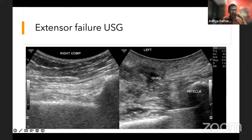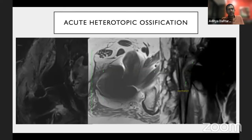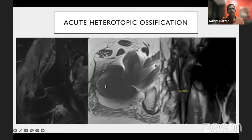Ultrasound is also great — here's a normal quadriceps tendon going to the patella, and here's an example showing big scar tissue with no patellar tendon going across — a quadriceps tendon rupture. So we can see superficial soft tissue structures well on ultrasound.